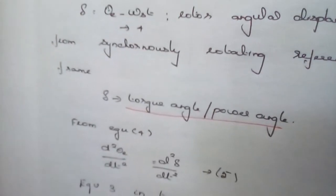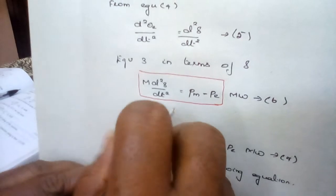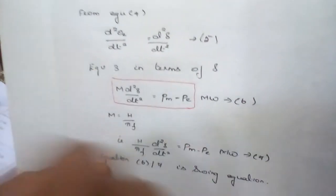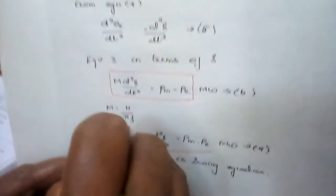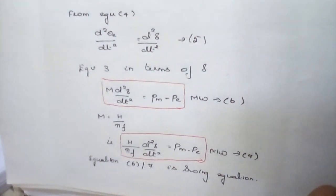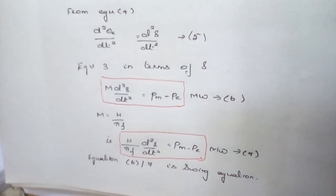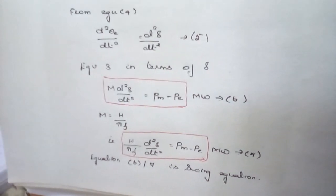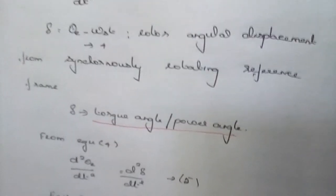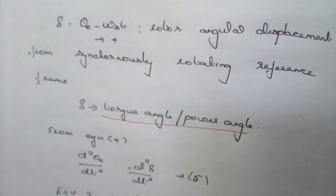Delta is known as the torque angle or power angle. The swing equation can be written as: M · d²δ/dt² = Pm − Pe, or equivalently as H/πf · d²δ/dt² = Pm − Pe. These two forms are the swing equation and they describe the rotor dynamics of the synchronous machine, either in generating or in motoring mode. The obtained expression is a second-order differential equation where the damping term is absent, based on the assumption of a lossless machine, and the damper winding torque is also ignored.